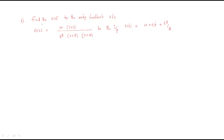Hello everyone, we will discuss a problem regarding steady state error. The problem is: find the steady state error for the unity feedback system where G(s) = 10(s+1) / [s²(s+2)(s+10)], with input r(t) = 10 + 5t + t²/2. We are asked to find the steady state error.